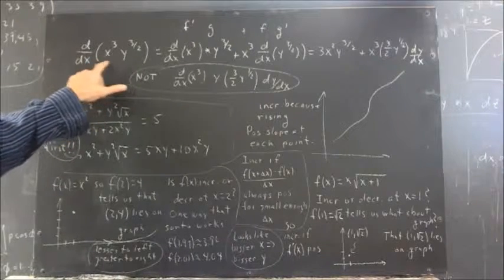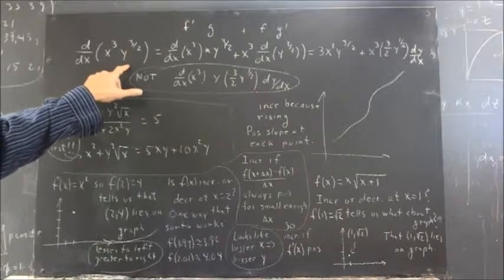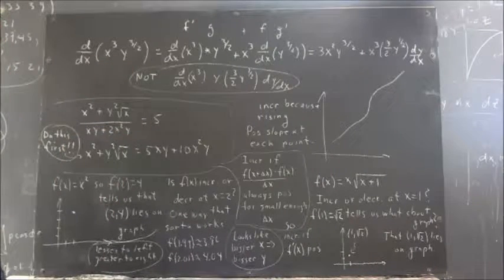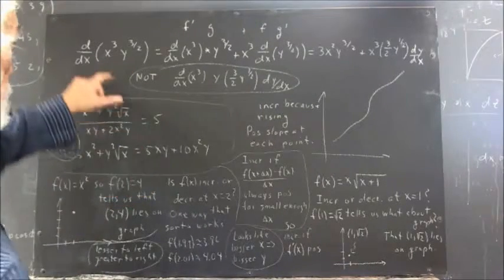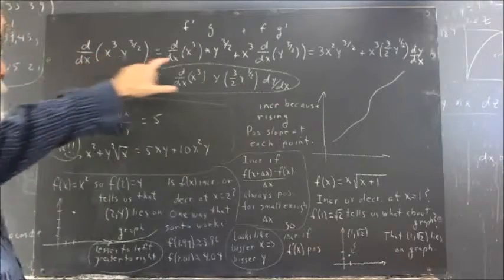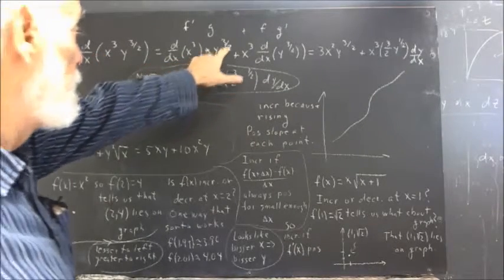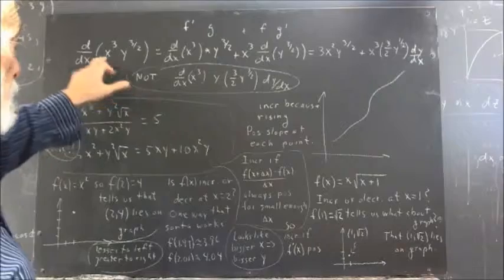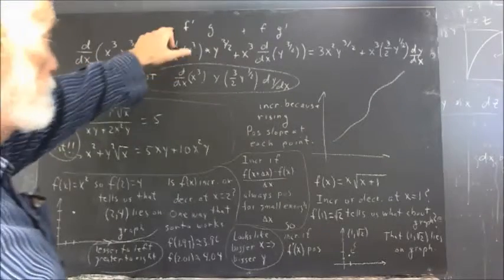This is a product function. Product of the x cubed and the y to the 3 halves function. So what's the derivative? Well, it's the derivative with respect to x of x cubed multiplied by y to the 3 halves. That's like this is f and g. That's your f prime g.